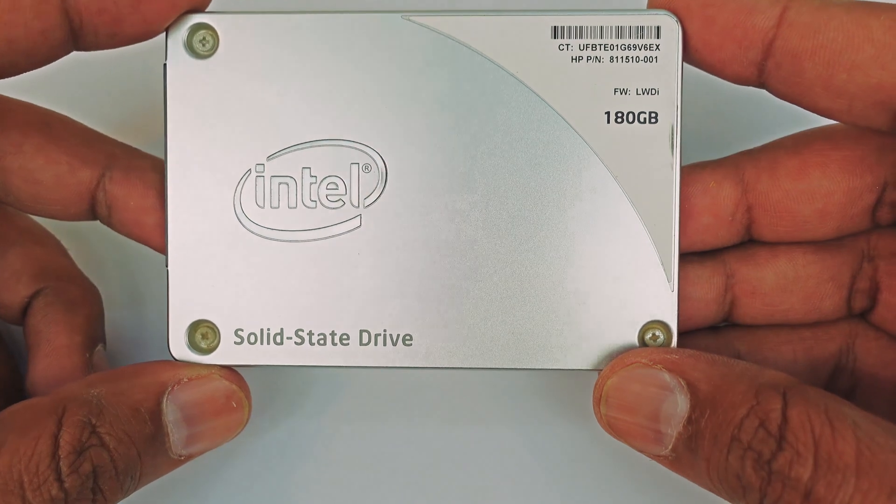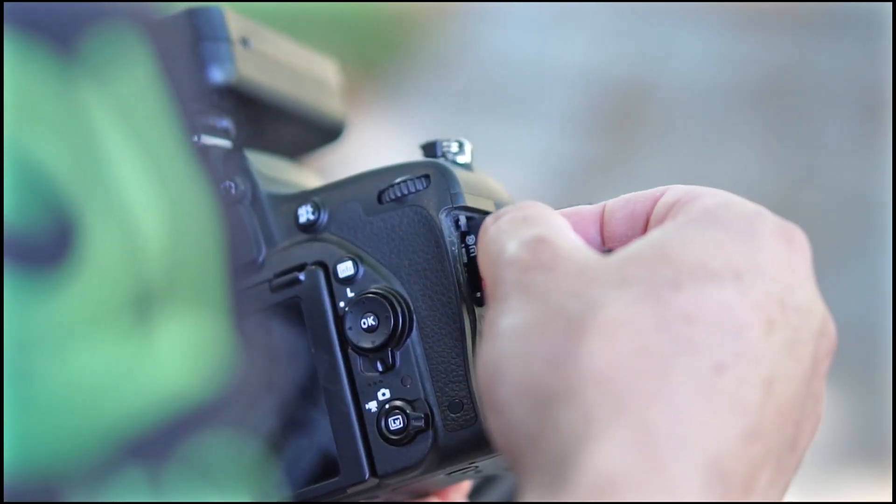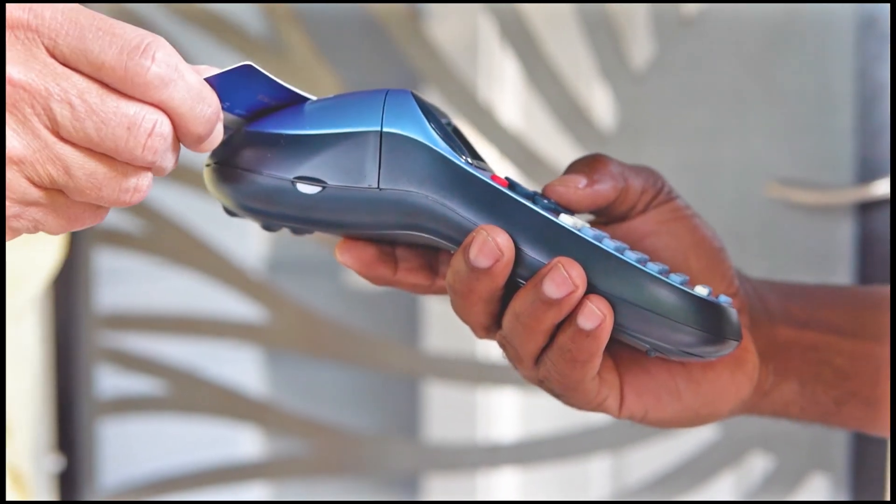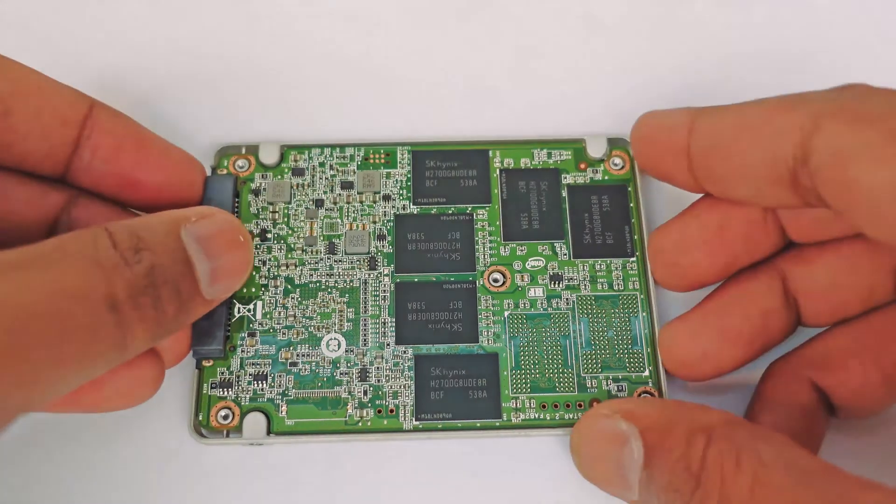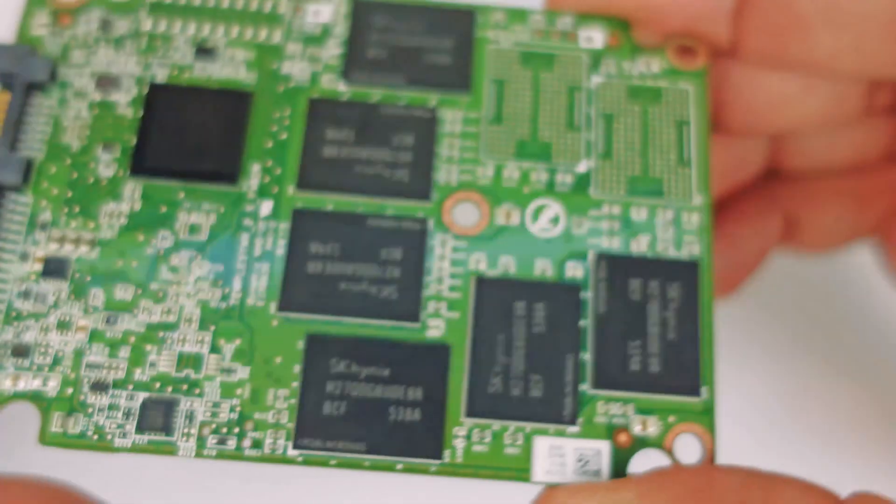Flash memory is used in SSDs, USB pen drives, SD cards, mobile phones, and many other digital devices. Because it has no mechanical parts and is completely static, it has many advantages over other types of memories.